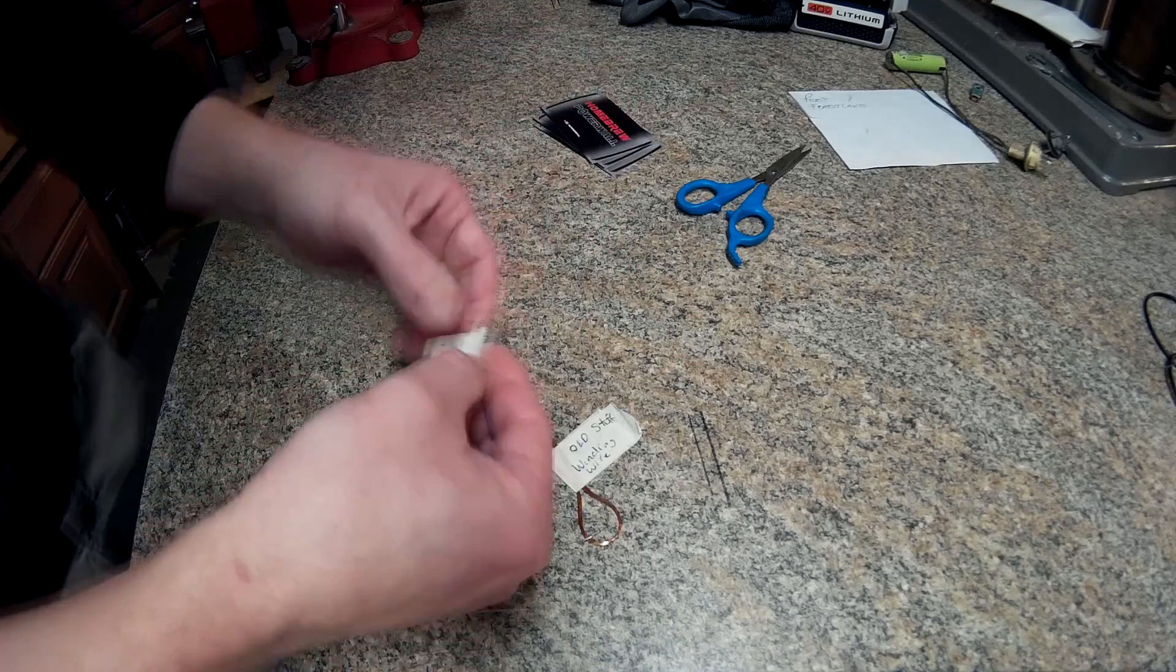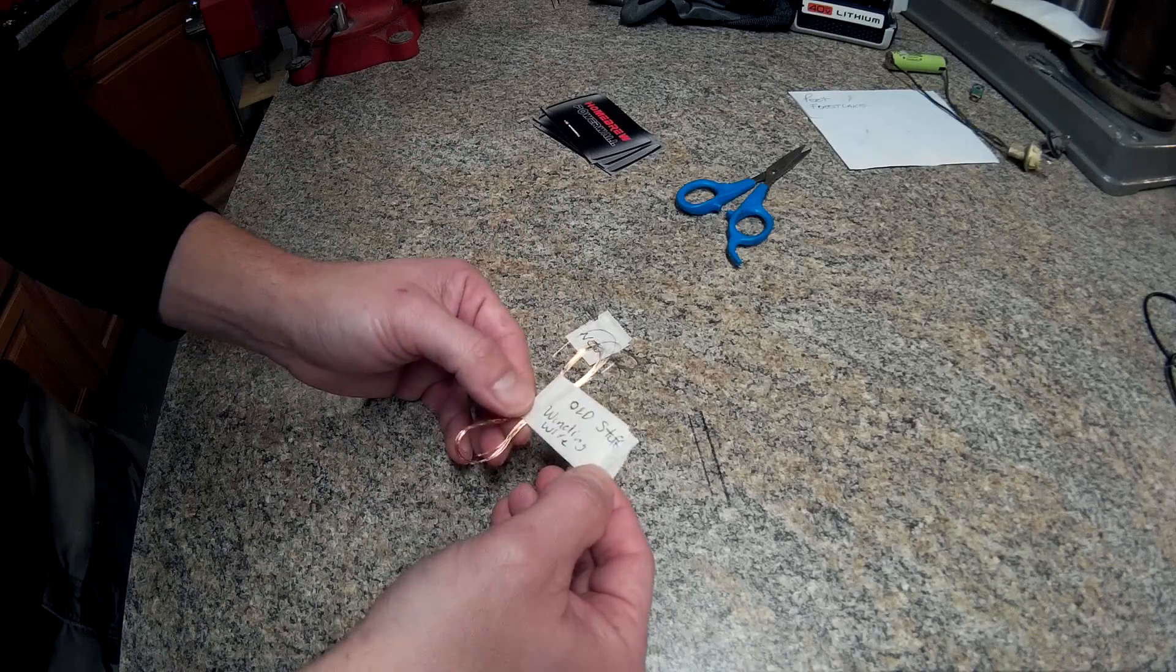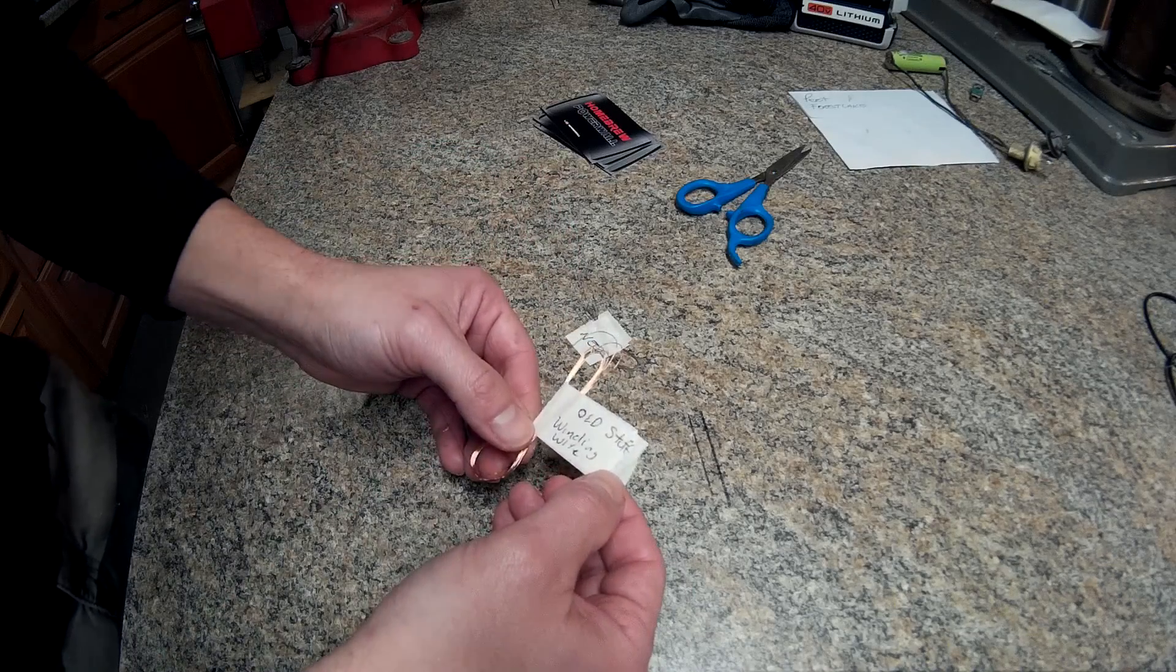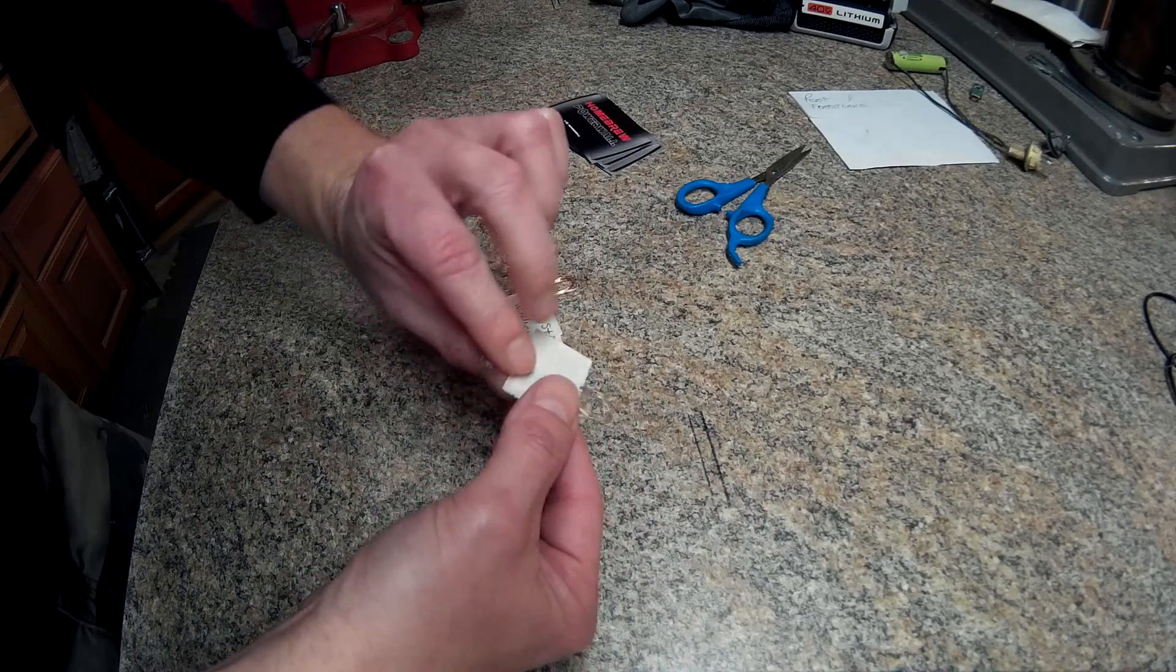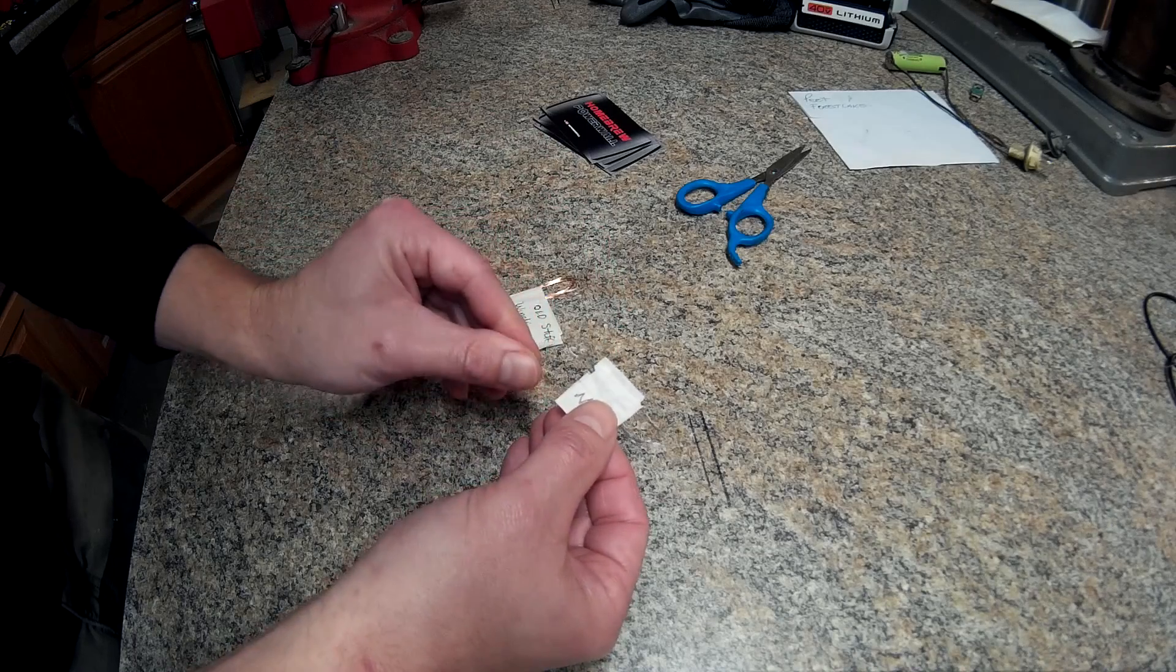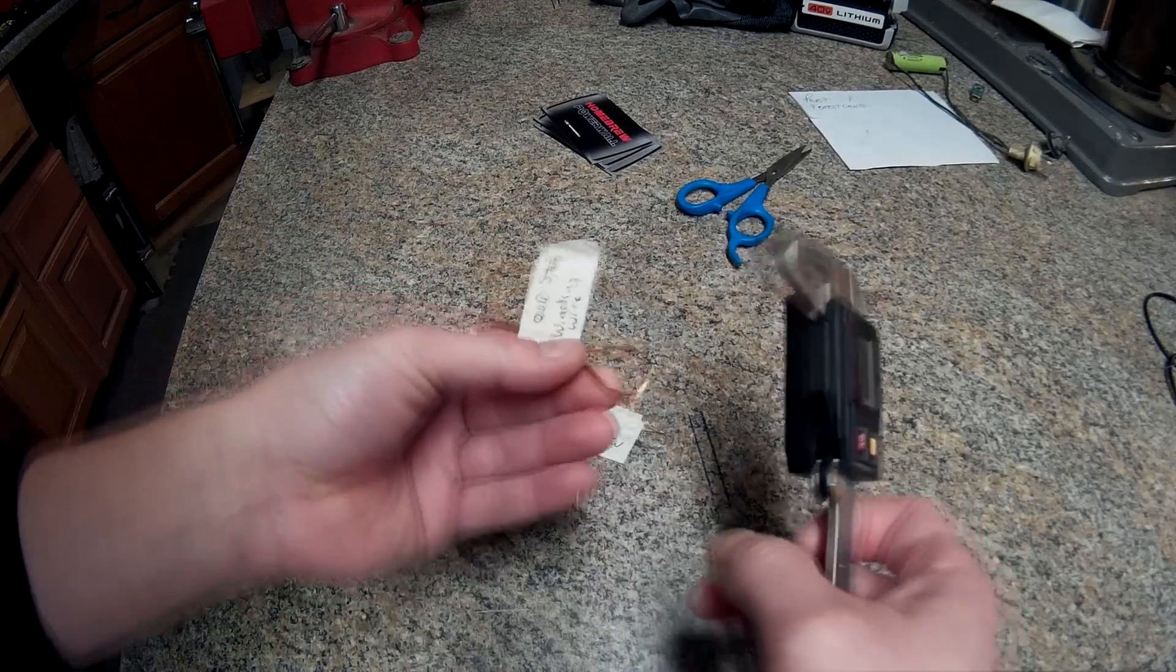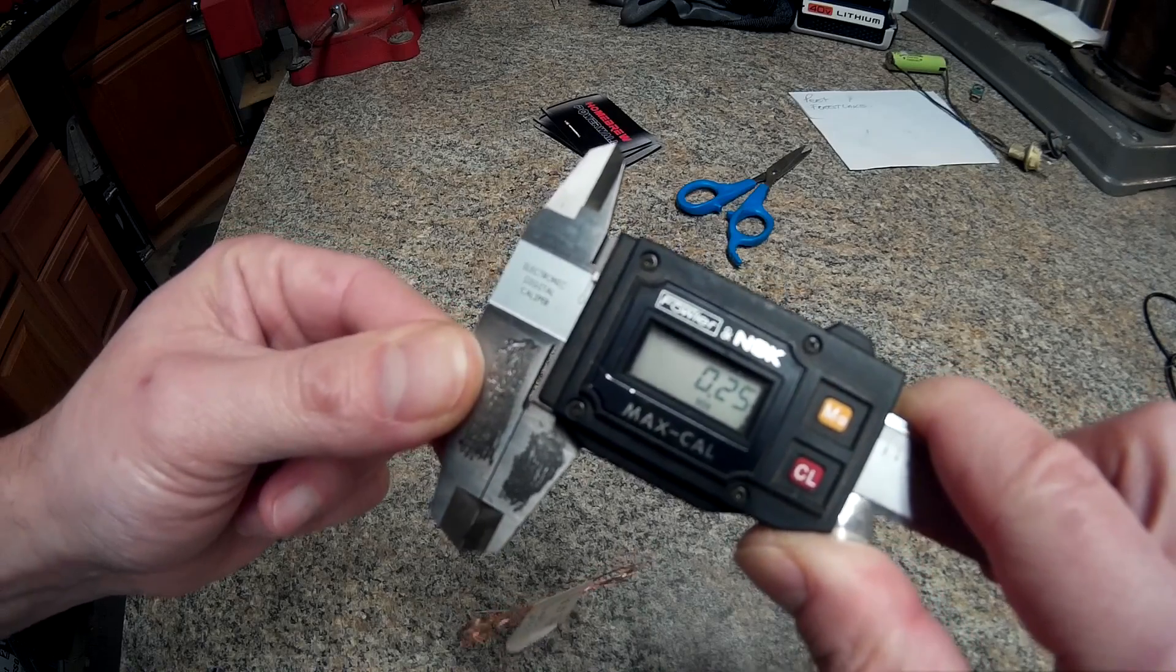Okay, he's got two different types here. The old stuff which is a winding wire, and the new stuff which looks like tinned wire and a little bit thinner. The old winding wire is 0.25 millimeters and the new stuff is 0.19.